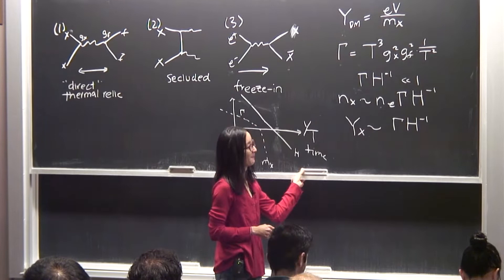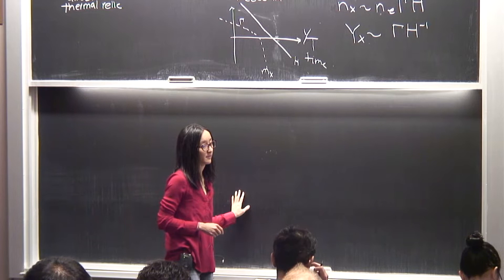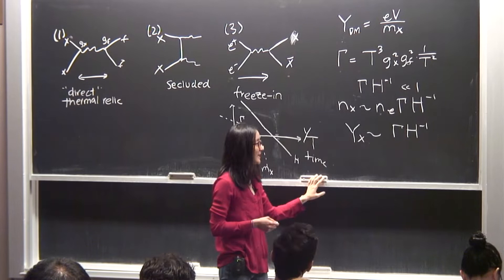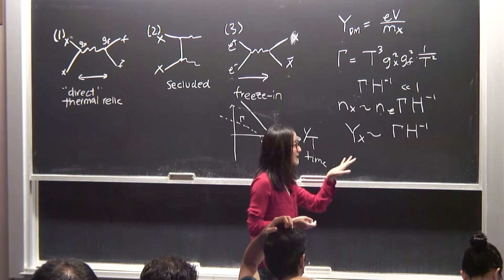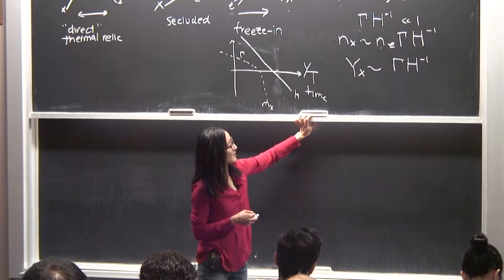A student asks: since we manifestly have more dark matter than ordinary matter, and we're assuming electron and dark matter masses are similar, how can we have fewer dark matter particles than electrons but still have more dark matter total? The answer: we can still have more energy density in dark matter because it's non-relativistic. If it was ever in thermal equilibrium, there'd be way too much. So we want a small number density that, due to being non-relativistic and stable, becomes a large energy density today.